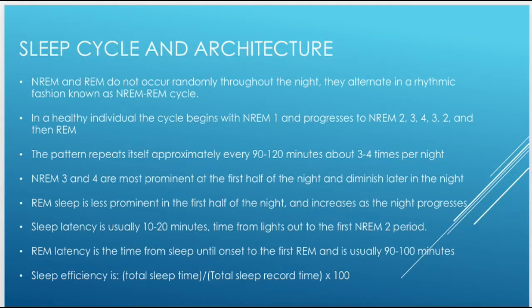Picking up where we left off, I'm going to talk a little bit about sleep cycle and architecture. We already determined that there's non-REM, where you have the slow rolling eye movements, and REM. They don't occur randomly — there are cycles and rhythms to this process. It's not a random occurrence when you're in non-REM versus REM, and they alternate in that rhythmic fashion throughout the night.